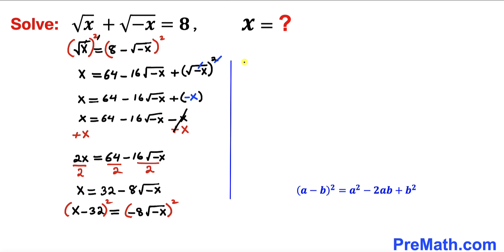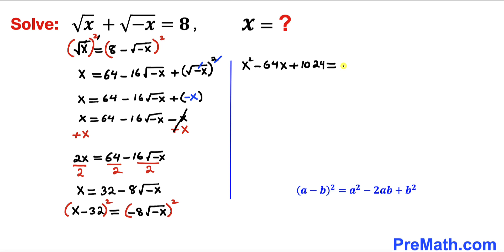So the left hand side is going to become x squared minus 64x plus 1024, equals to — and let's focus on the right hand side. Negative 8 squared is going to give us 64, and this square and square root undo each other, so we simply get negative x. Therefore the right hand side becomes negative 64x. And now we can see negative 64x on the left and negative 64x on the right — they cancel each other out.